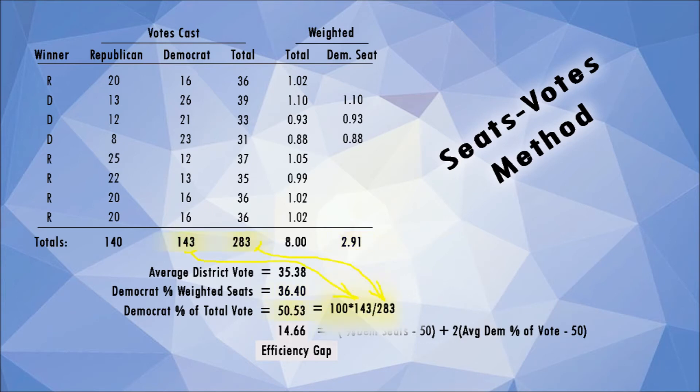Next, the total votes for Democratic candidates divided by the total statewide votes gives a 50.5% vote share. Plugging these seats and votes percentages into the equation gives an efficiency gap of 14.66, which is a very high number and it indicates gerrymandering.